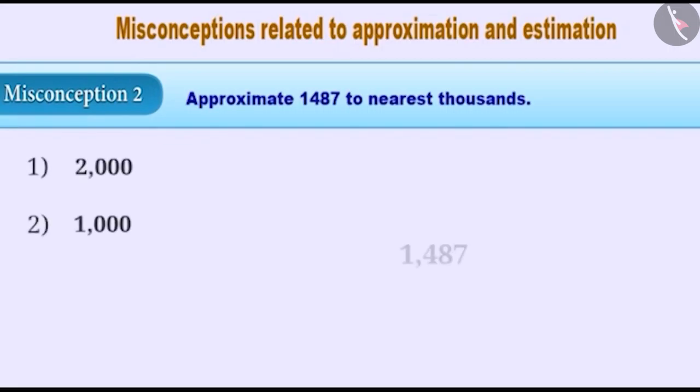Misconception 2: Approximate 1487 to the nearest thousands. Sometimes, in order to get the solution, we approximate to the nearest tens, then hundreds, and then thousands. This is an incorrect way.